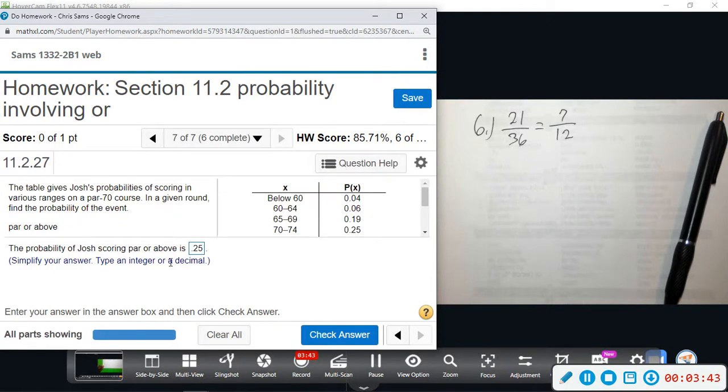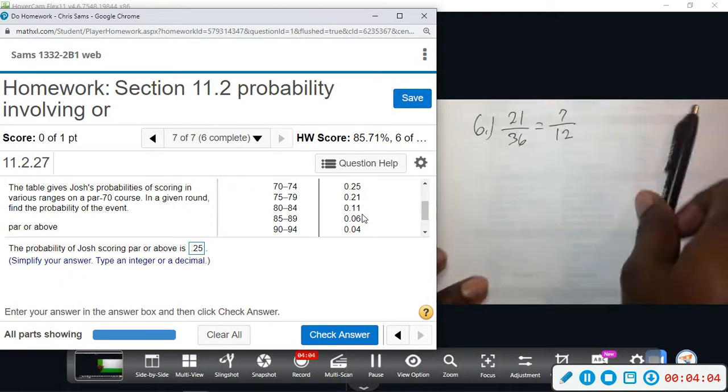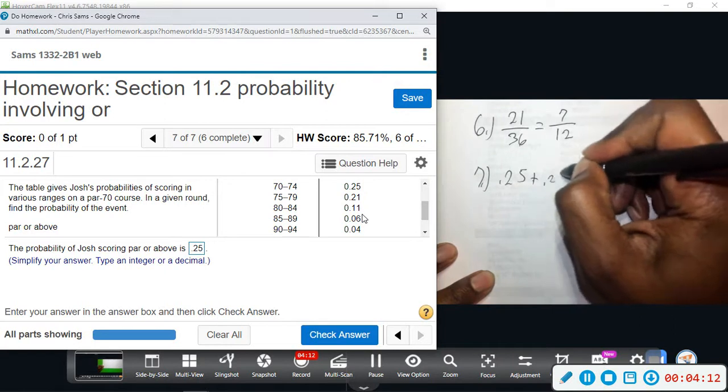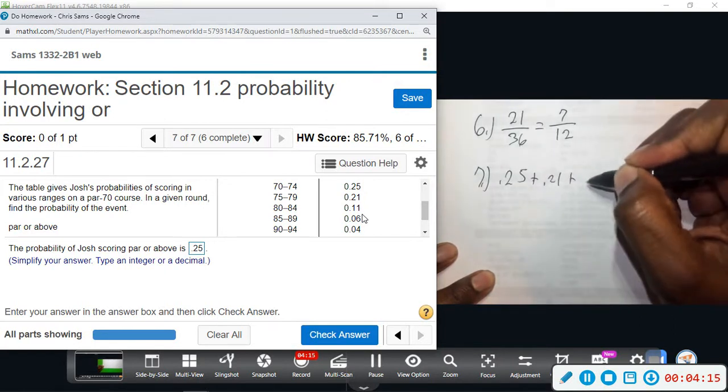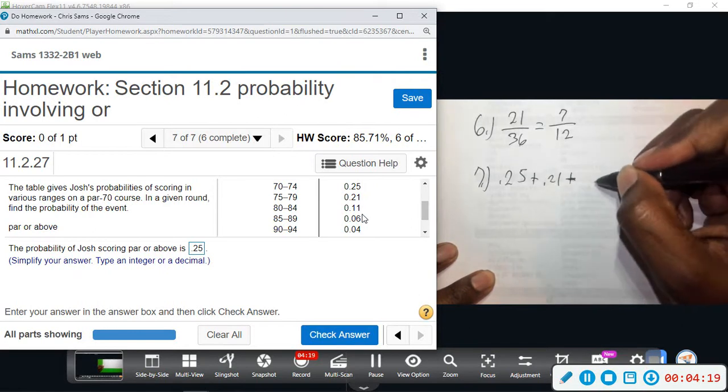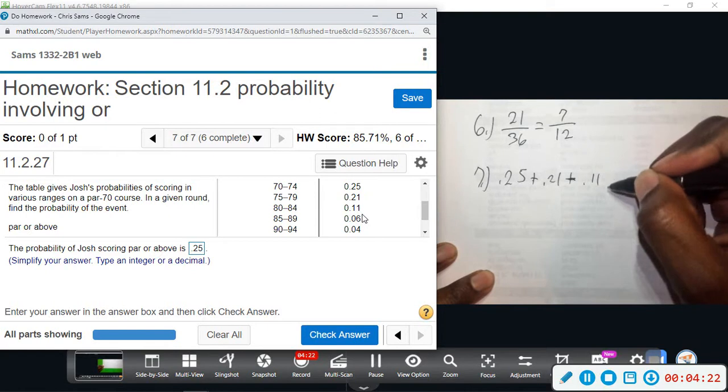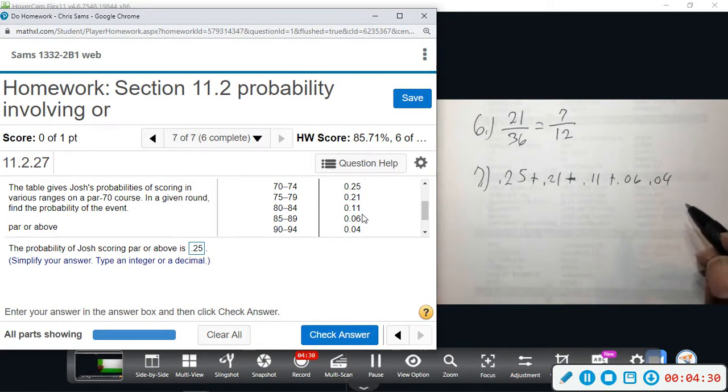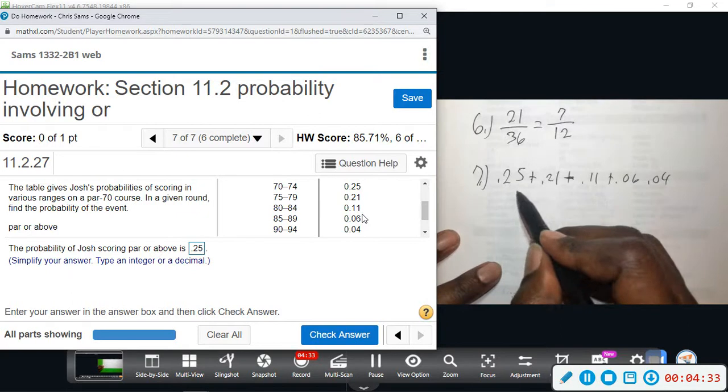Oh, I'm sorry, there's more to the table I'm not seeing all the numbers. Par or above, the 0.25, and the rest of these we need to add. So 0.25, 0.21, 0.11, 0.06. So I'm gonna do 0.25 plus 0.25 plus 0.21 plus 0.21 plus 0.11, 0.06, 0.04. We're gonna add these up.